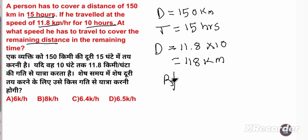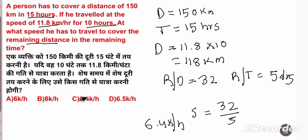Remaining distance kitna bachega? Total mera 150 tha, 118 cover ho gaya, to remaining 32 km bachega. Aur time kitna bachega? 15 minus 10 equals 5 hours. To speed equals distance by time, 32 by 5, equals 6.4 km per hour. Option number C will be my answer.